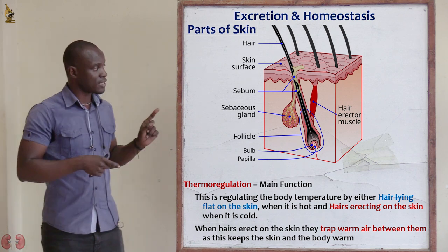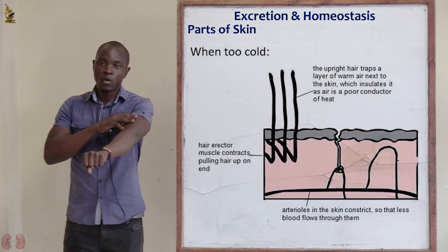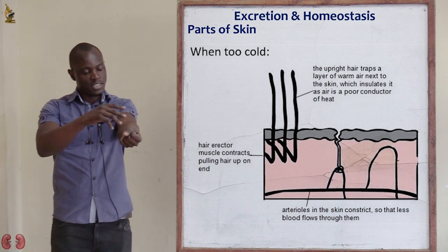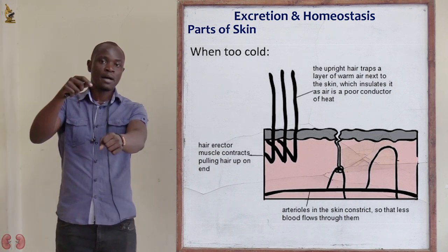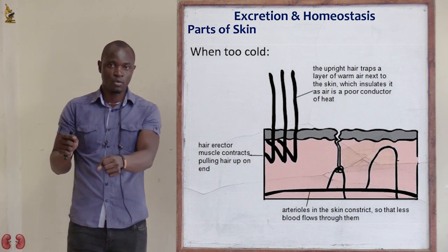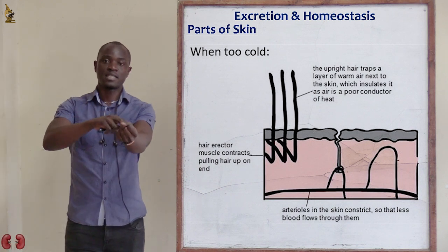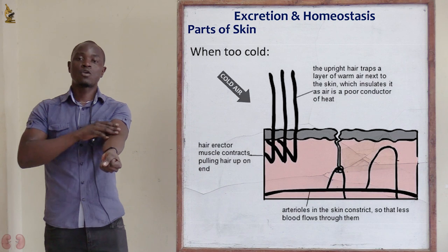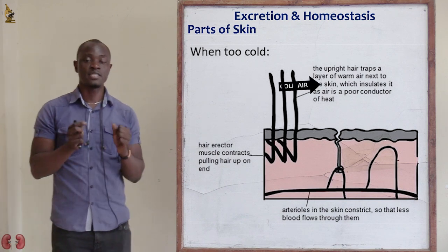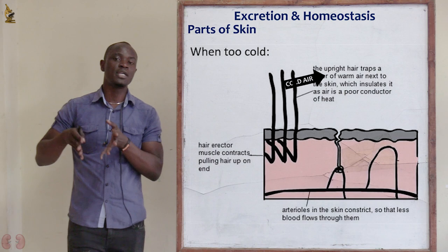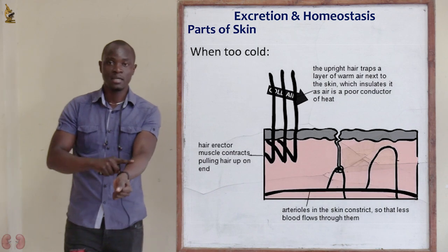When the hairs stand upright, they trap moisture and warm air between them. This means that if cold temperature tries to come into contact with the skin, it won't be possible, because the surface of the skin is already occupied by warm air. The cold temperature will bounce off. In this way, the hairs keep the body warm by preventing cold temperatures from contacting the skin.